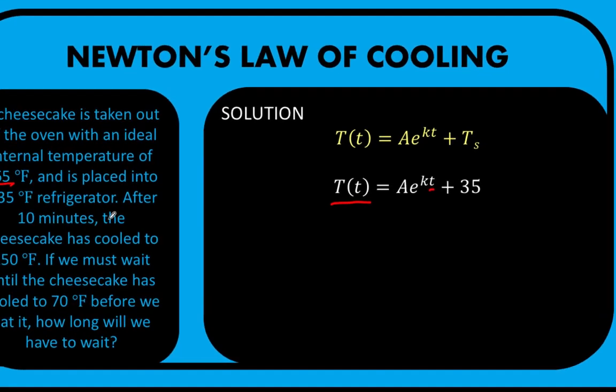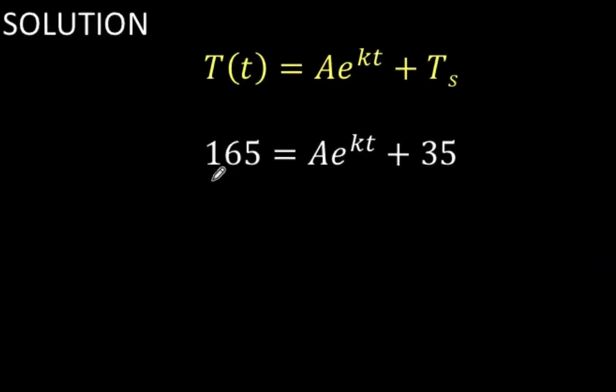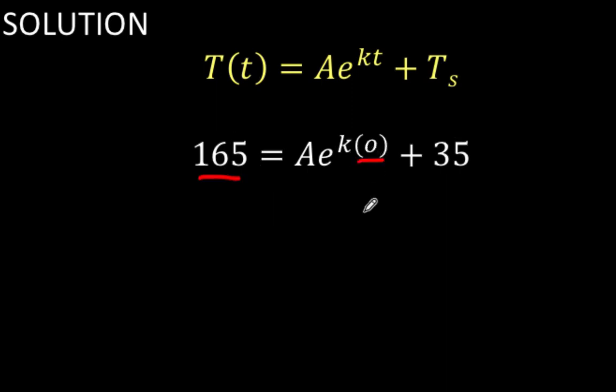So let's do the substitution. We now have 165, and we are going to replace this t by zero. Then let's simplify this equation: k times zero is equal to zero.